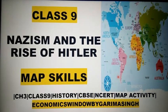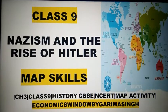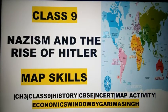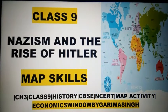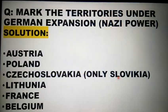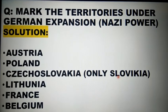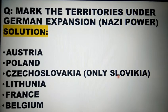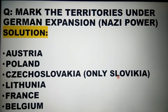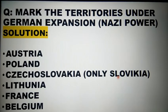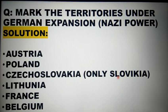Welcome to Economics Window by Garima Singh. In this chapter we'll be doing the map activity of chapter number three of history — Nazism and the Rise of Hitler. From this chapter you will get the question to mark the World War One or World War Two countries, which we have already done in our previous video. Here we'll be doing the last question from the map activity, which is marking the territories under the German expansion or Nazi power.